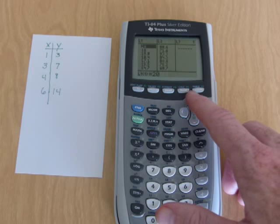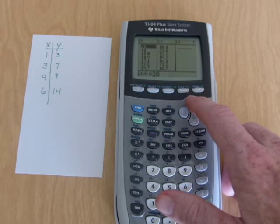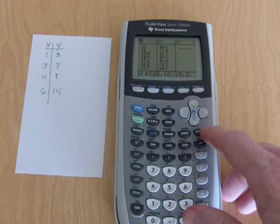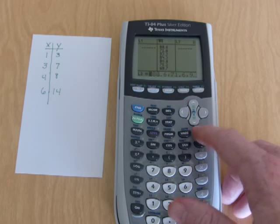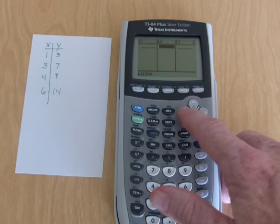And there's my list of data values. Now I'm going to go up to L1 there. I'm going to hit clear and then enter to clear my list. Move to L2, hit clear and enter and clear that list.